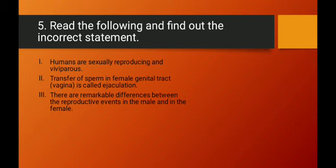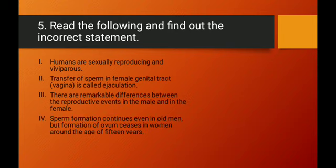Statement 3 — there are remarkable differences between reproductive events in males and females — is correct. In males, spermatogenesis begins at puberty; in females, oogenesis begins at the embryonic stage. Statement 4 — sperm formation continues in old men, but ovum formation ceases around age 15 — is wrong. Ovum formation ceases around age 45–50, not 15.